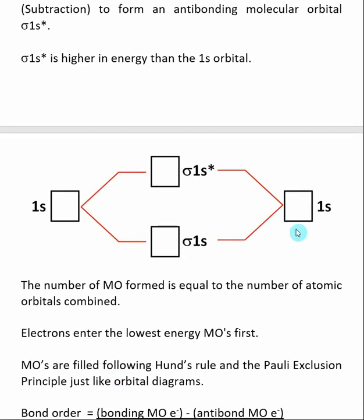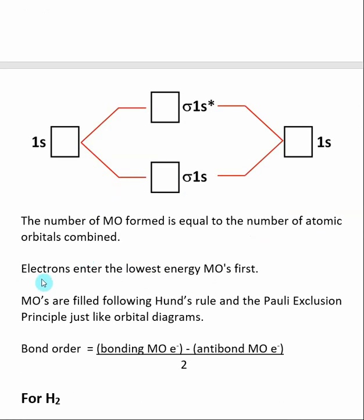As the two hydrogens near each other, the s orbital from one hydrogen and the s orbital from the other combine to make our bonding molecular orbital and our antibonding molecular orbital. The number of molecular orbitals formed is equal to the number of atomic orbitals combined. Once we've determined the molecular orbitals, we start putting in valence electrons. Electrons enter the lowest energy molecular orbitals first, and MOs are filled following Hund's rule and the Pauli exclusion principle, just like atomic orbitals.